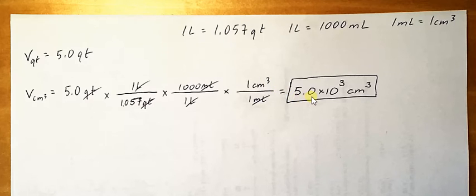So the answer comes out to 5.0 times 10 to the third cubic centimeters. Your calculator gives you 4,000 something or other, yeah, 4,730.